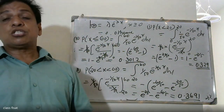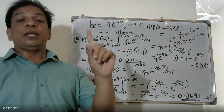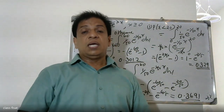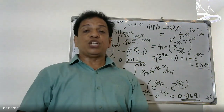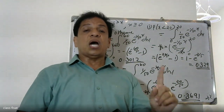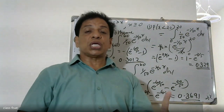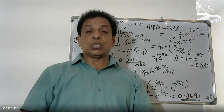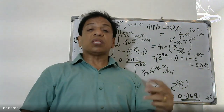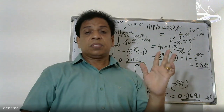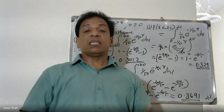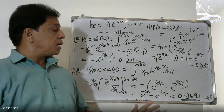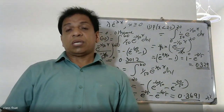The probability density function of the exponential distribution is f(x) equal to lambda times e raised to minus lambda x, where x is greater than 0. The mean is 1 over lambda and the variance is 1 over lambda squared.